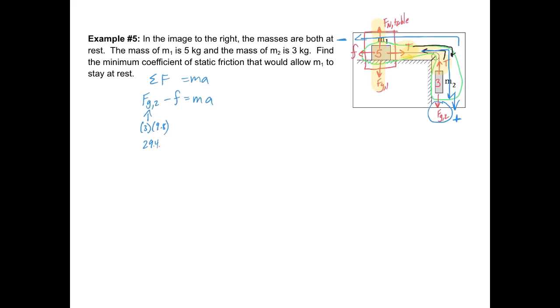So 29.4 newtons minus the friction equals, now mass times acceleration, I did say that I want it to stay at rest here. Now, if block one is at rest, then block two is also at rest. And so we're going to put zero acceleration here. And we can solve that, and we'll end up getting that the friction is equal to 29.4 newtons. So we now know the force of friction that is required in order for my block to stay at rest.